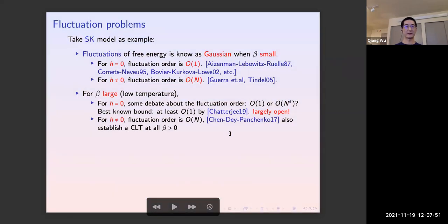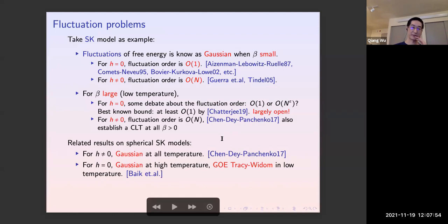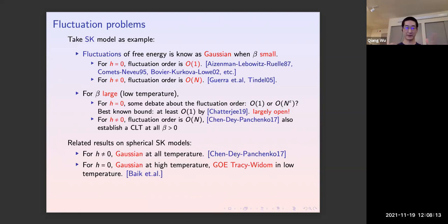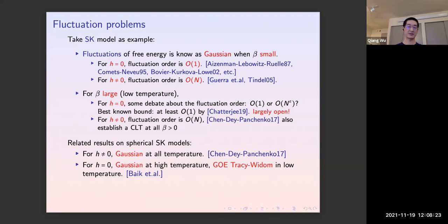Briefly, here are some results on the spherical SK model, similar to what the last speaker described. Chen-Dey-Panchenko's results imply linear fluctuations for h not equal to zero. For h equal to zero, recent work by Landon, Sosoe, and co-authors, using contour integral and steepest descent methods, shows Gaussian fluctuations at high temperature and GUE/GOE Tracy-Widom distribution at low temperature.